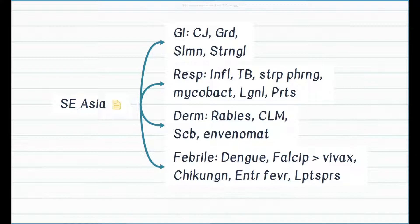What are the most common GI pathogens among patients from the Southeast Asian region? Dealing mainly with diarrheal illness or traveler's diarrhea, we have Campylobacter, Giardia, Salmonella, and Strongyloides. If you have a patient with respiratory symptoms from Southeast Asian countries, the most likely differentials are influenza, TB, strep pharyngitis, mycobacteria other than TB, Legionella, and pertussis. In the case of respiratory illness, influenza and TB are most important in Southeast Asia.